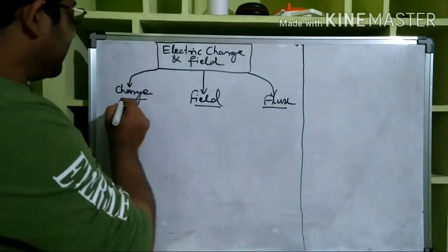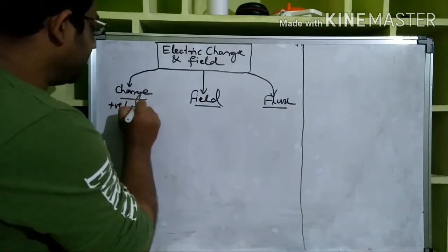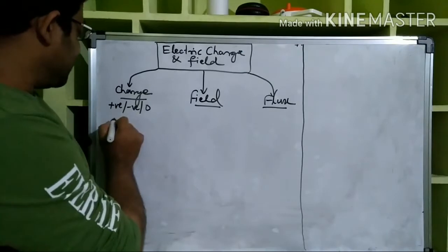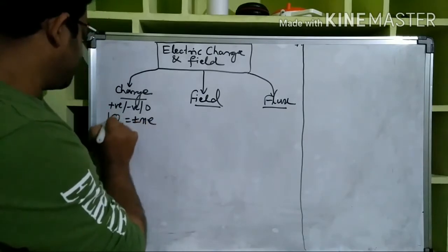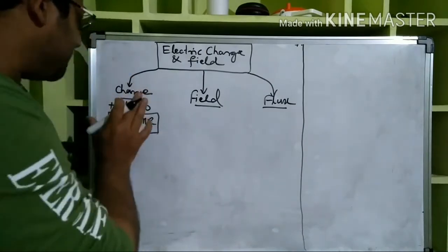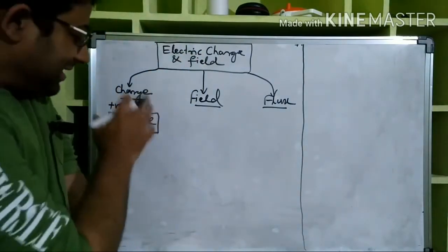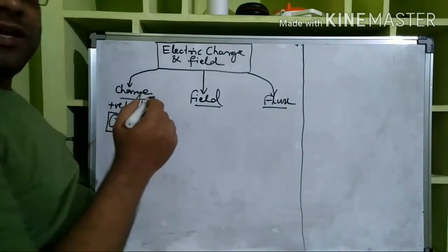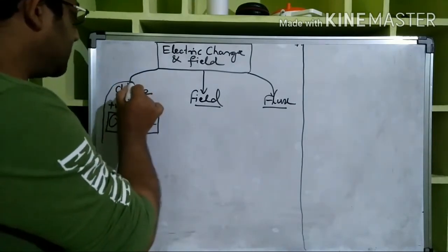Under charge, we first studied types of charge: it can be positive, negative, or zero for neutral bodies. Another important thing studied is quantization of charge — q equals plus or minus ne. When this comes up, the associated microscopic-level concept also comes to memory. That is essentially what we covered regarding charge.